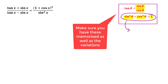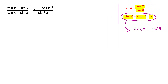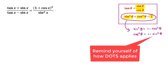We could move the cos squared over and get sin squared theta equals one minus cos squared theta. Likewise, moving the sin squared over gives cos squared theta equals one minus sin squared theta. In both of these cases we recognised the difference of two squares pattern.